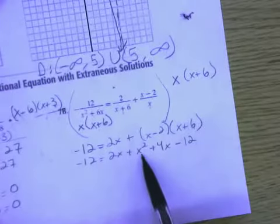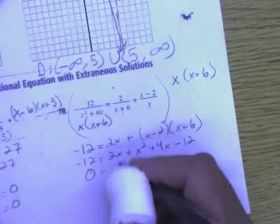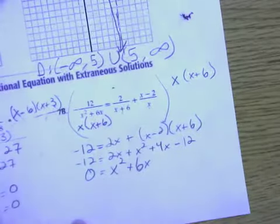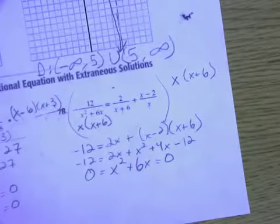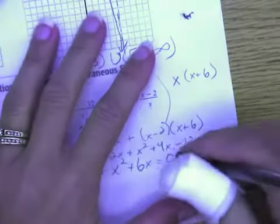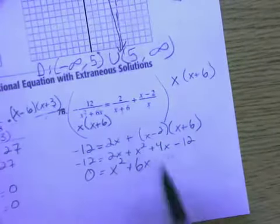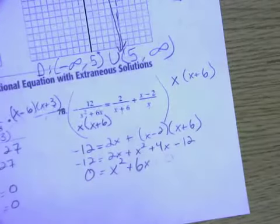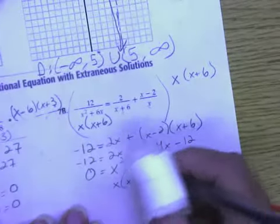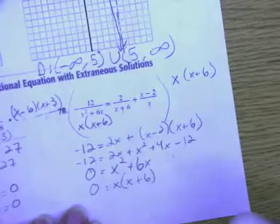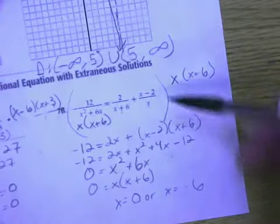Once again, it's a quadratic, so I want everything on one side of the equation. I'm going to bring everything over to the right so that my x squared term stays positive. So, I have 0 equal to x squared plus 6x equals 0. And the negative 12s would cancel out. At this point, I can factor the x out, and I've got x plus 6. So, that means x equals 0, or x equals negative 6.